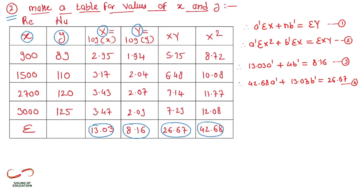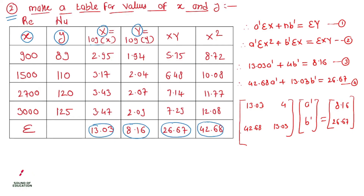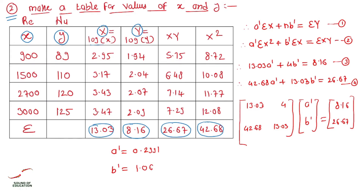Now convert equations 3 and 4 into matrix form and solve using Gauss elimination method to get a' and b'. The matrix form is: [13.03, 4; 42.68, 13.03] * [a'; b'] = [8.16; 26.67]. You can also use Cramer's rule or a direct calculator. After solving, a' = 1.0664 and b' = 0.2991.